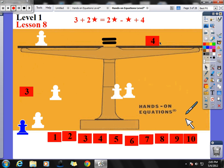Subtract 3 from my left side. Subtract 3 from my right side. 4 minus 3 is 1. That leaves me with star equaling 1.